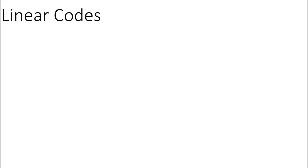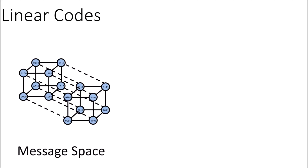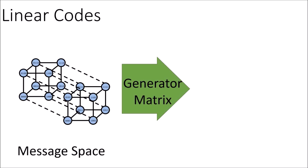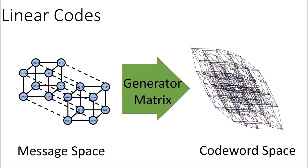In the last video, I introduced linear codes which take binary messages from the message space and use a special matrix called a generator matrix to lift them up into higher dimensional space, which is the codeword space. The output of the messages in the higher dimensional space are called the valid codewords, and because the valid codewords end up being spread apart, we are able to correct errors by moving invalid codewords to the nearest codeword.